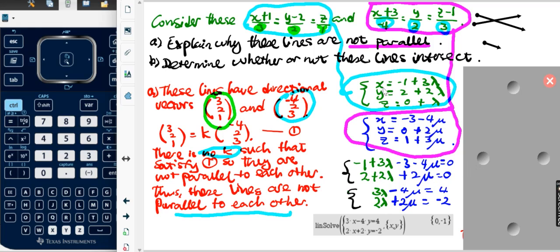Now I equate them. Because there are two unknowns, I only need two equations. I pick x and y coordinates. After simplification, this is three lambda minus four mu equals four, and two lambda plus two mu equals negative two. At this point, I use my GTC calculator.